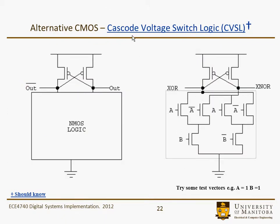Here's an example of a schematic layout representation with the NMOS logic block. We have out and out-bar, and we can see that these are connected in a cross-coupled manner to the pull-up section of the alternative. Here's the XOR implemented. I'm not going to go through how this section was implemented, but you can if you like. We'll just look at one instance and look at a test vector, basically simulating it.